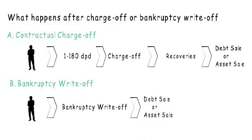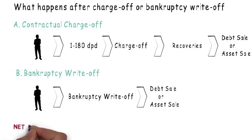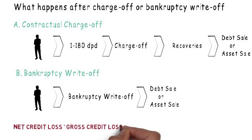So then what is the final loss to the bank? The final loss to the bank, also referred to as net credit loss, is equal to gross credit loss minus any asset sales and recoveries.